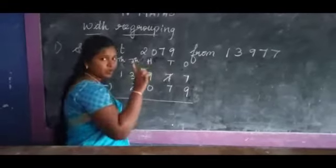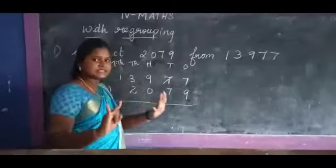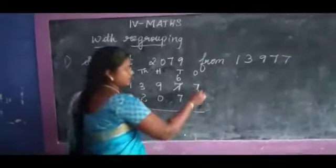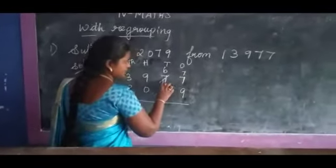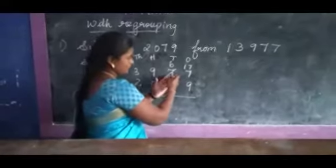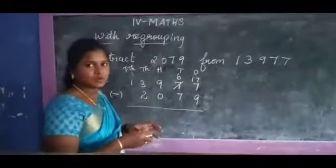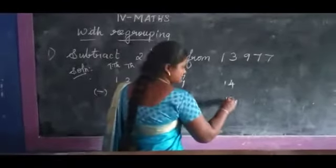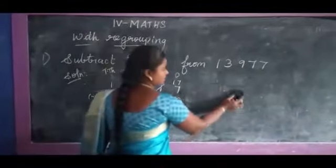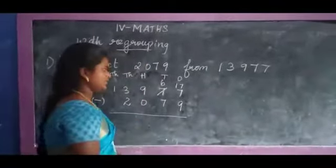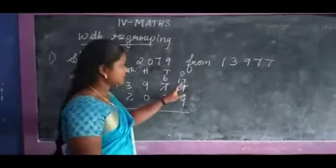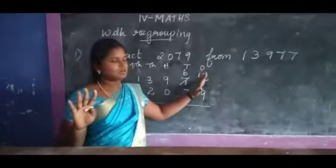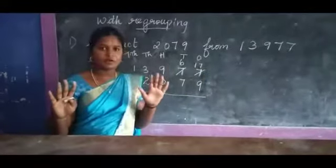So first thing, here we have to borrow. 7 plus 1 balance 6. So you have to put 6 here. Then here, already 7 is there, so 7 becomes 17. So 17 in the mind, 9 in the finger — 17 before subtraction.